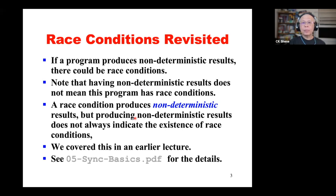This is a very important concept to remember. A program that produces non-deterministic results may be the natural result of parallel or concurrent execution. But a program in which you put one or two race conditions will always produce non-deterministic results. We covered this in an earlier lecture — see that slide for more details.